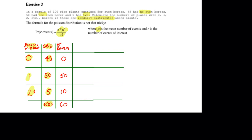I need to work out the mean number of borers per plant. These 45 plants have no borers. These 50 plants give us 1 borer each. And these 5 plants, because they have 2 borers, give us an extra 10 borers. So that gives us 60 borers in total, and a mean of 60 borers divided by 100 plants equals 0.6.